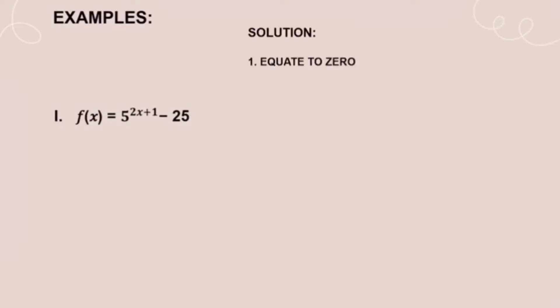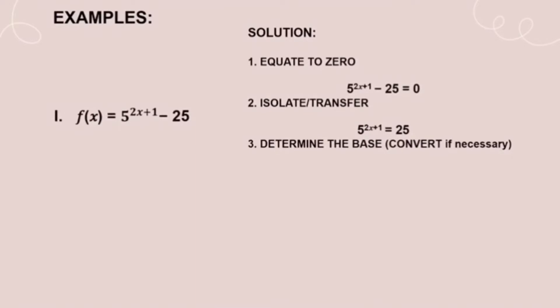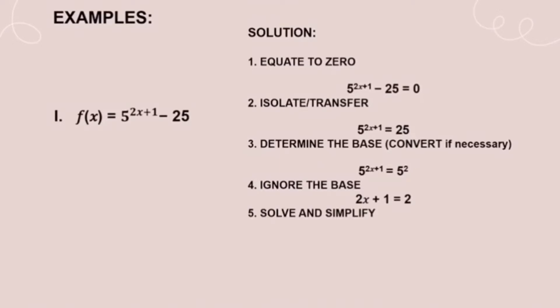First equation: f(x) = 5^(2x+1) − 25. Equate to zero: 5^(2x+1) − 25 = 0. Isolate: 5^(2x+1) = 25. Convert: 5^(2x+1) = 5². Ignore the base: 2x + 1 = 2. Solve: 2x = 2 − 1, so 2x = 1, and dividing both sides by 2 gives x = 1/2, which is the zero of the function.